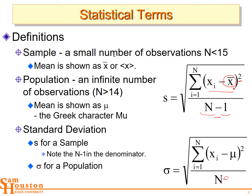Dividing by n minus one gives us a conservative estimate of our standard deviation. Because we squared these values, we really have the average of the squares of the deviations, so we take the square root — it's the square root of the sum of the squares of the deviations divided by the number of measurements. That gives us our standard deviation, which is an estimate of the deviations from the mean and therefore an estimate of our uncertainty.